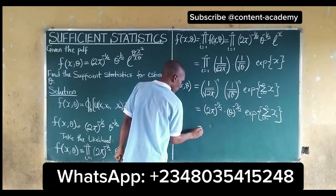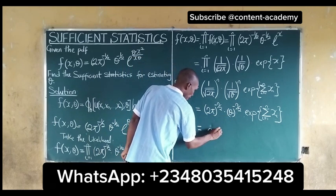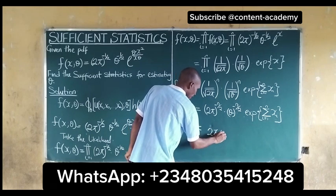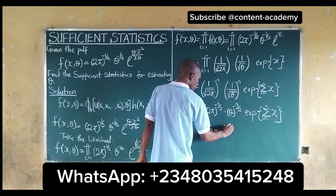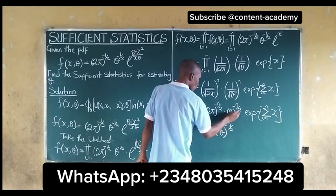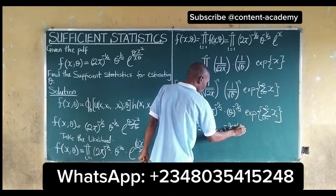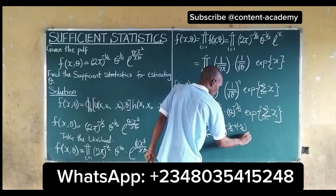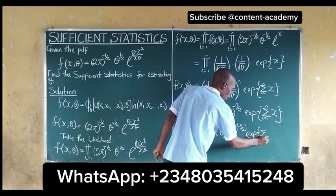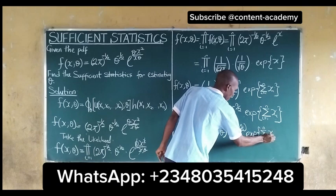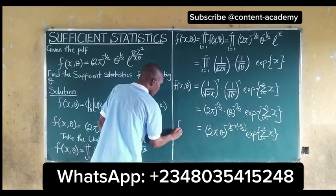From indices we can combine these terms to give: (2π · θ)^(−n/2 + (−n/2)) multiplied by exp(summation of xi, as i running from 1 to n). So this is what we get, and it becomes our simplified expression.